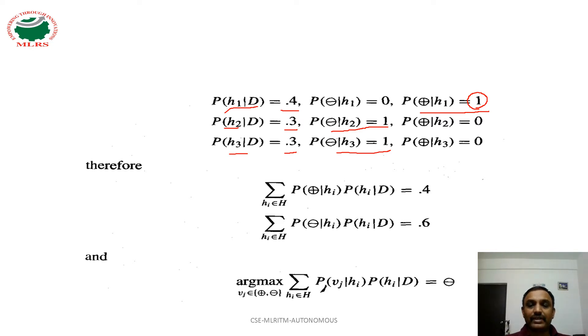By taking summation of those products, probability of positive on HI with probability of HI on data is 0.4, that is 1 multiplied by 0.4. Next one is on negative target output.